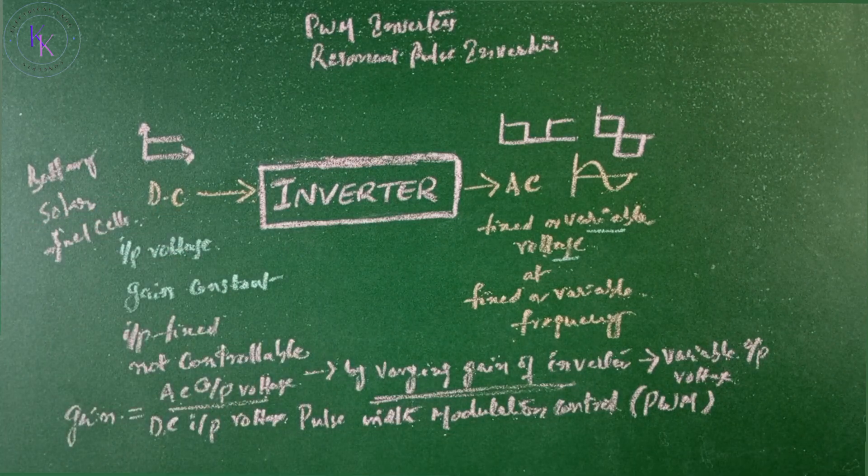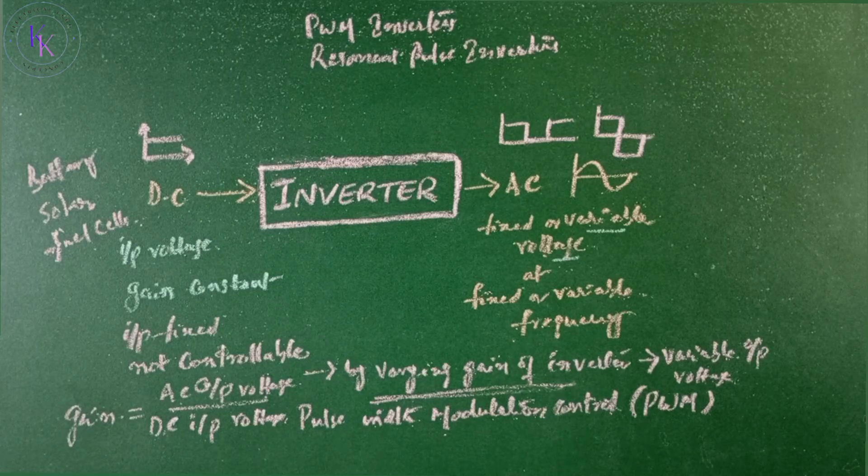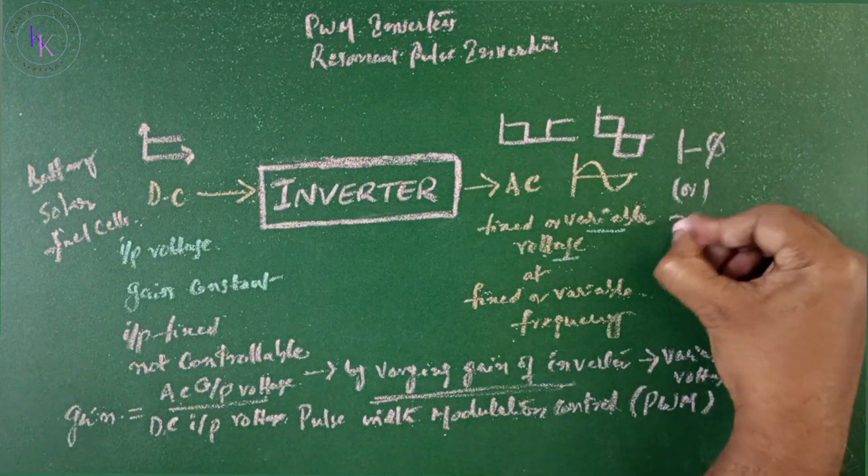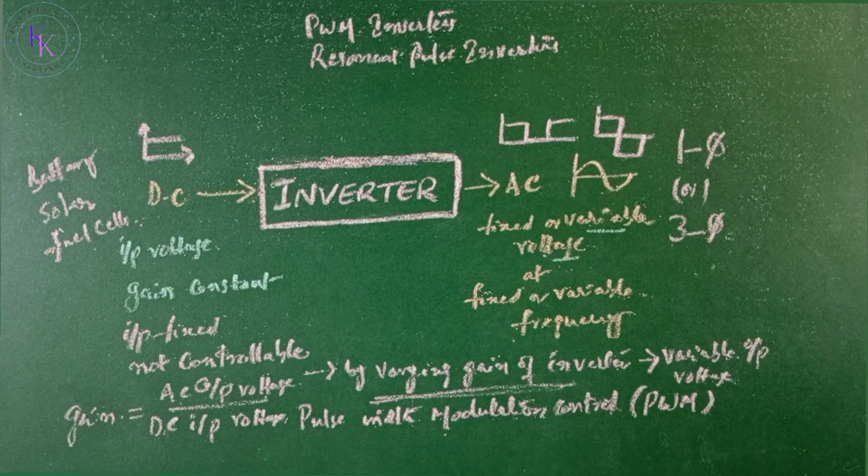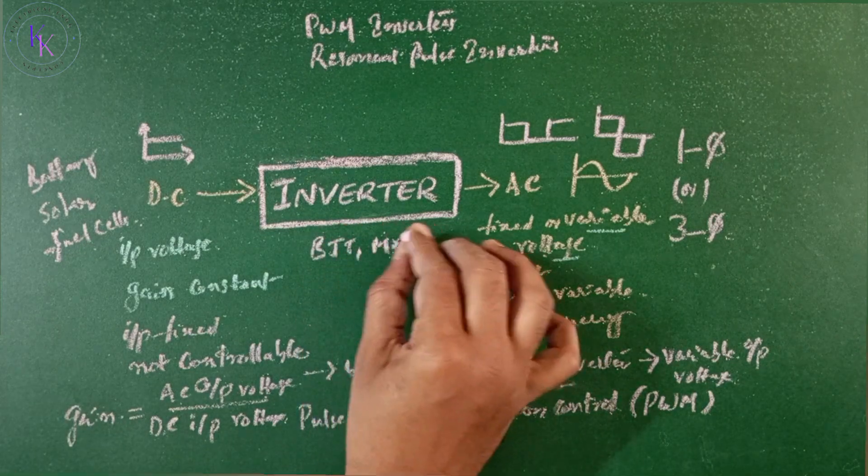These inverters are broadly classified into two types depending on whether the output is single phase or three phase. Each type can use controlled turn-on turn-off devices like BJT, MOSFET,